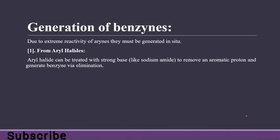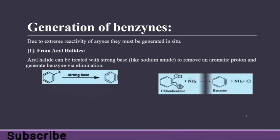How can we generate benzyne from aryl halides? An aryl halide can be treated with a strong base like sodium amide, which removes an aromatic proton and generates benzyne via elimination. First, the base removes the hydrogen to give NH3, then elimination of the halide occurs, giving our final product, benzyne.